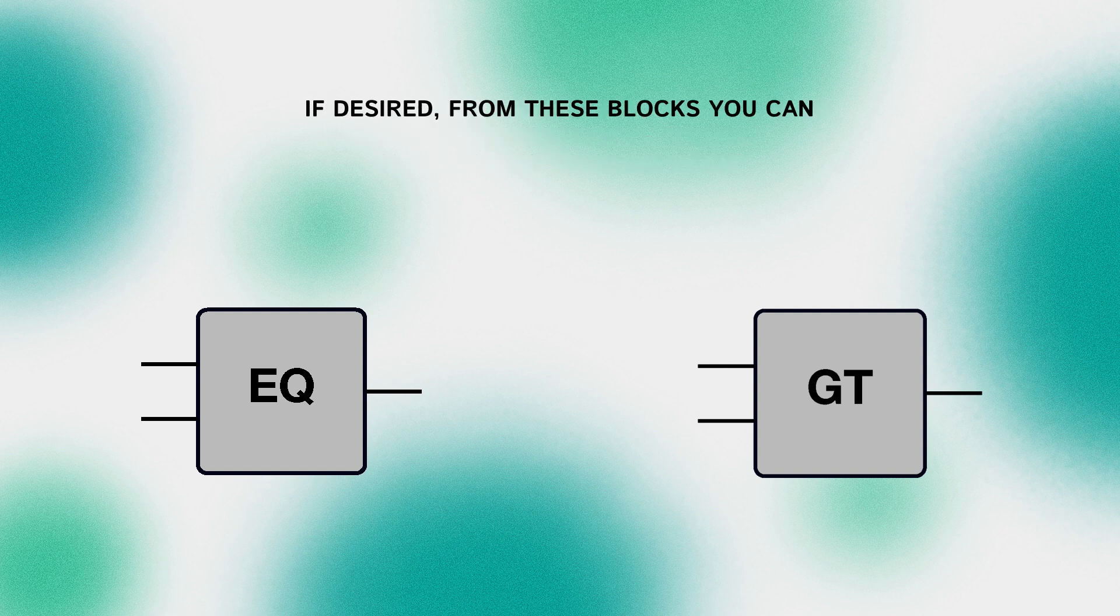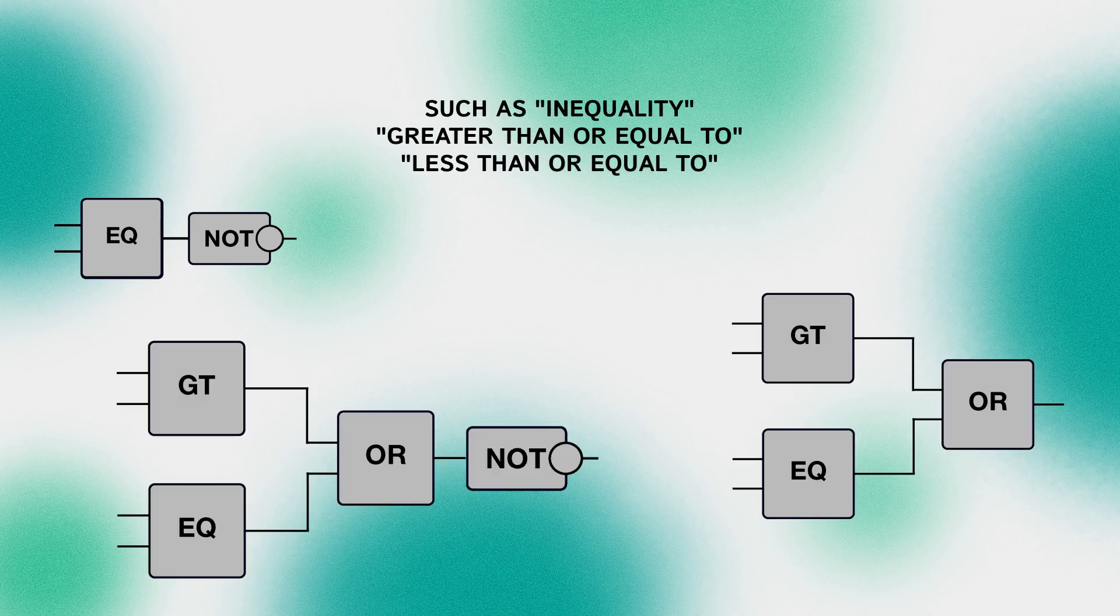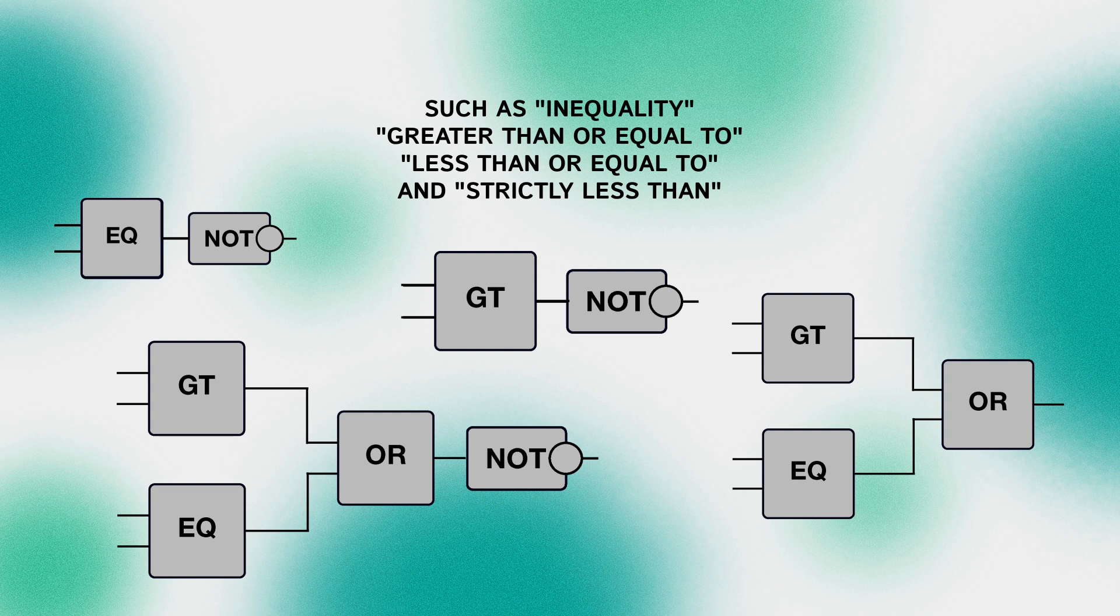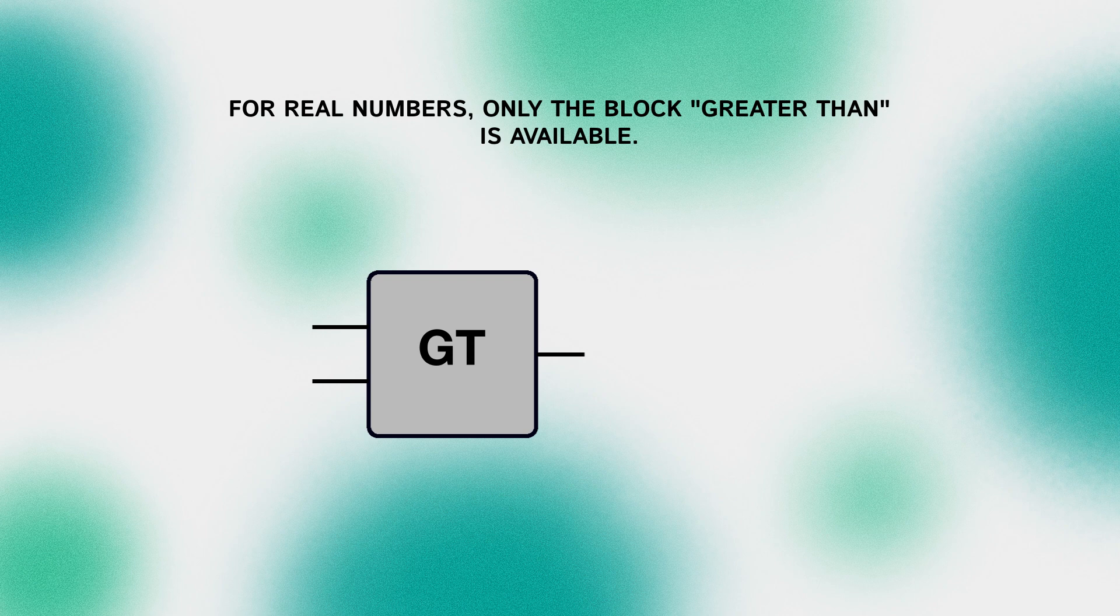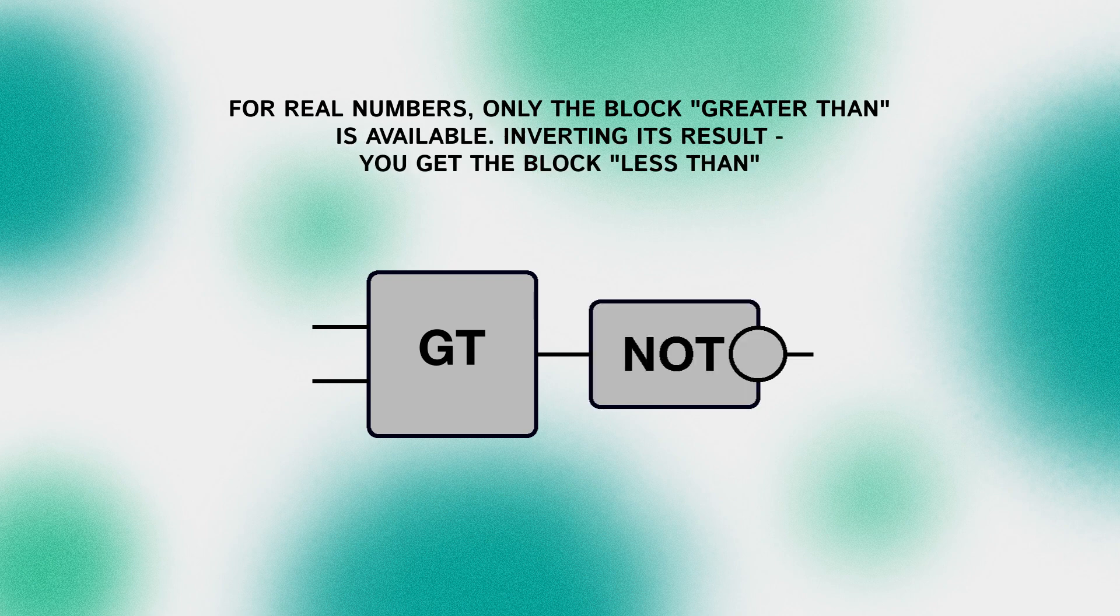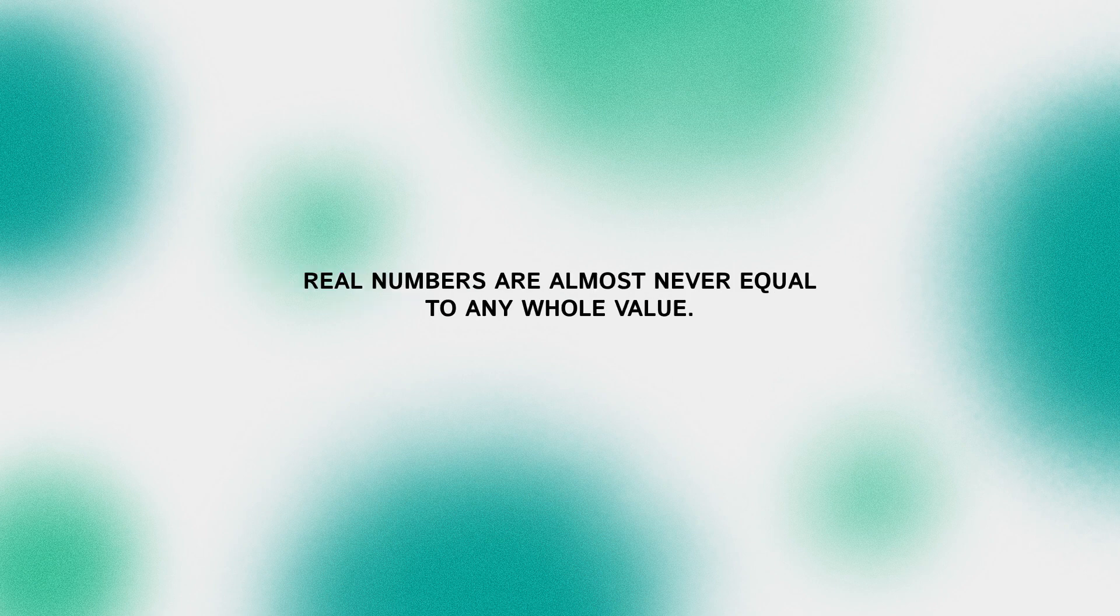If desired from these blocks you can assemble other blocks such as inequality, greater than or equal to, less than or equal to and strictly less than. For real numbers only the block greater than is available. Inverting its result you get the block less than. There is simply no check for equality for real numbers because it is not entirely correct. Real numbers are almost never equal to any whole value.